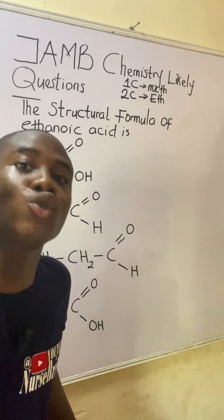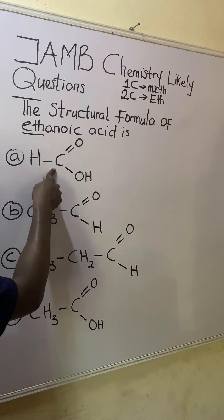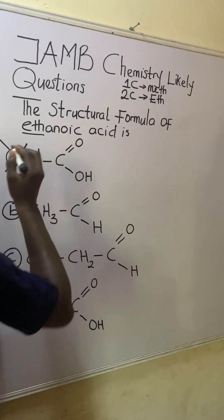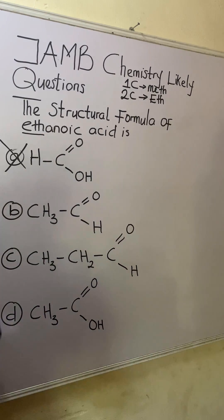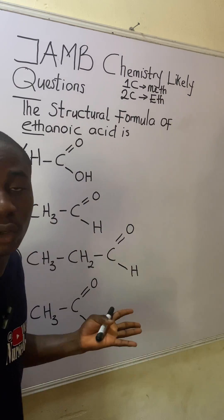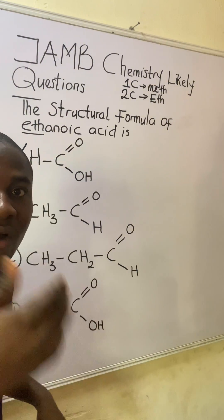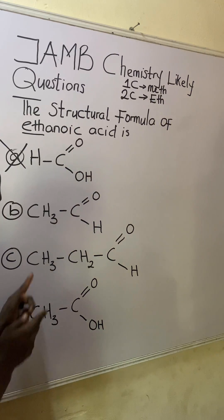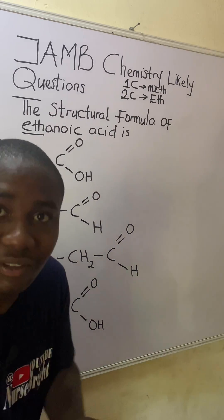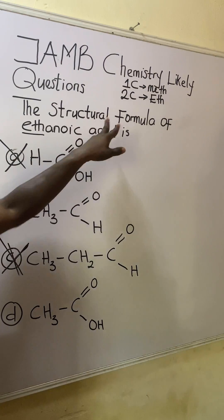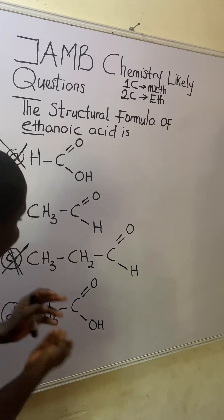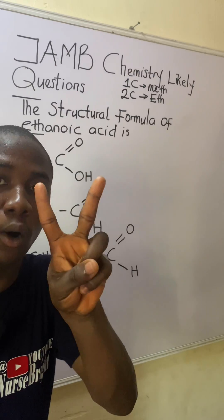Looking at the options, what we are looking for is the compound with two carbons. Option A has only one carbon, so it cannot be ethanoic acid — that's out. Option B has two carbons, so it can potentially be ethanoic acid. Option C has three carbons, so it is definitely wrong. Option D also has two carbons. So we've eliminated two options and are left with B and D.